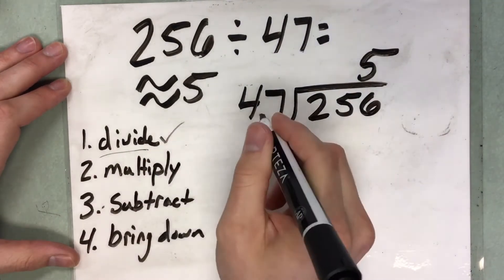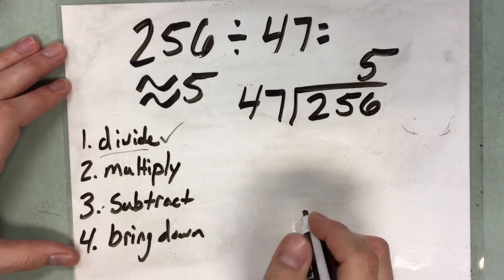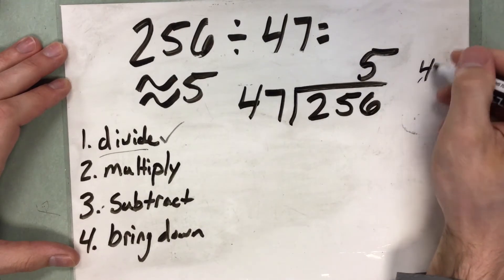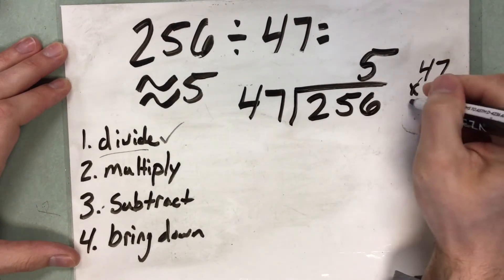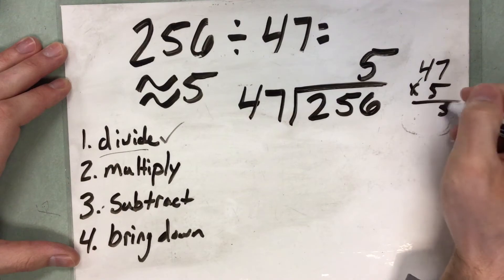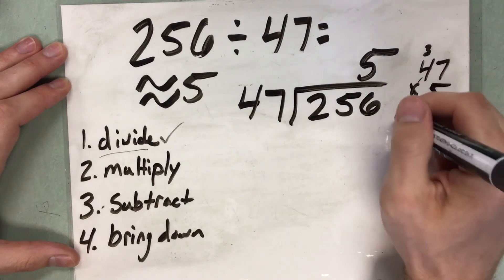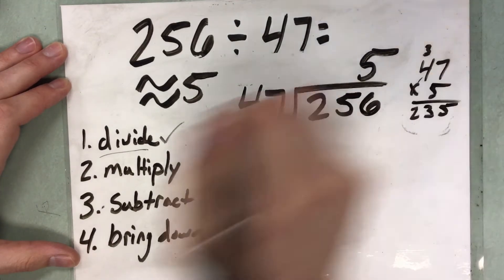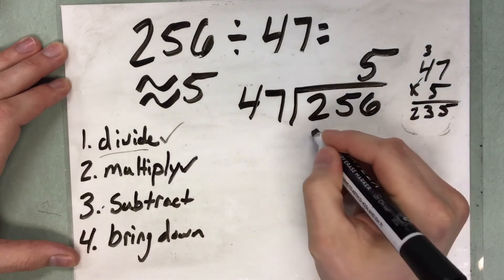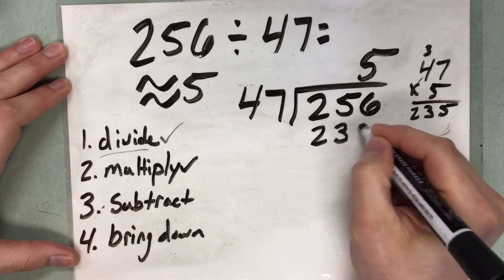Now I just need to multiply. What is 47 times 5? So to the side, I might have to make a little note, or work it out using the standard algorithm. That gives you 235. So I'm going to multiply. I'm going to write that number right underneath.